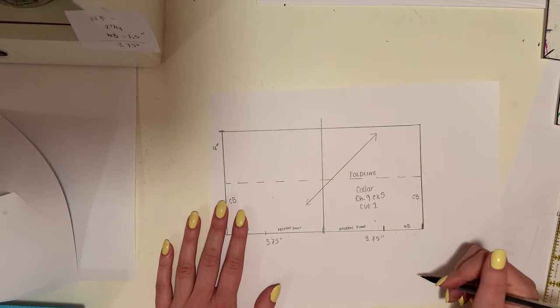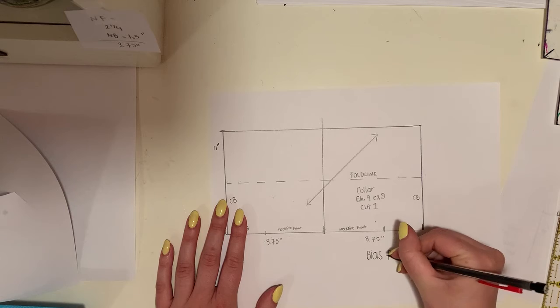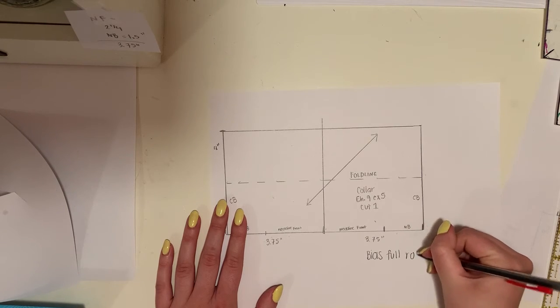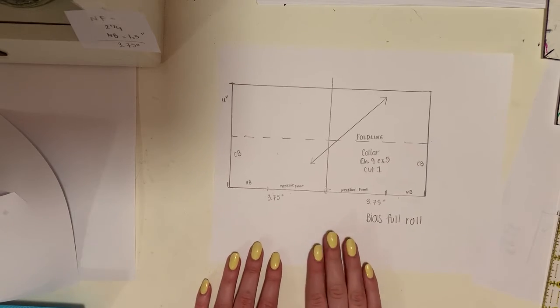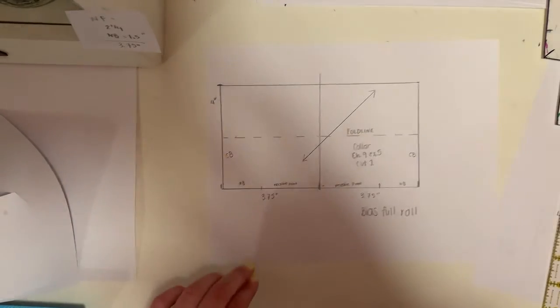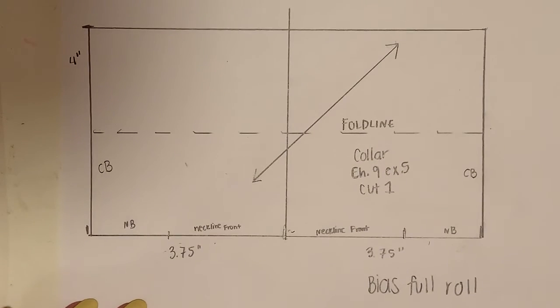This one is called the bias full roll, and that is it for this example. Let's zoom in so you can get a better picture of it.